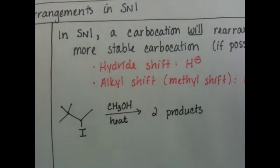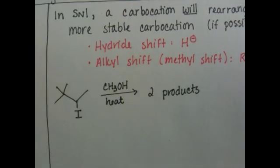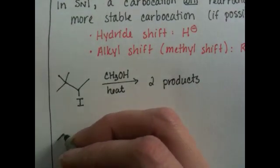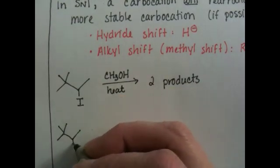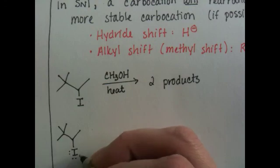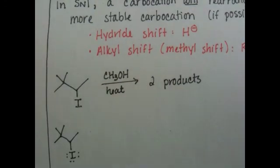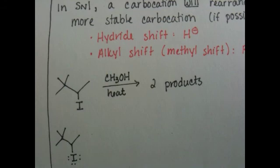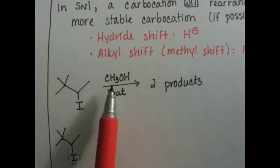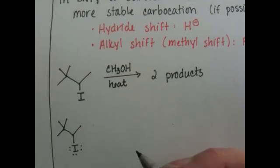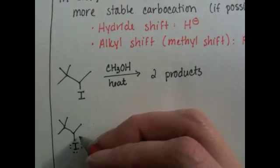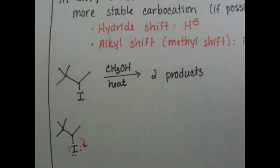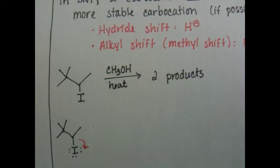So if we look at the mechanism, we can see how both products come about. Now we know that even though there's two products, they're both being made by the SN1 mechanism because that's the only possibility when you're dealing with a polar protic solvent. And the first step of the SN1 mechanism is always going to be loss of the leaving group to form a carbocation.